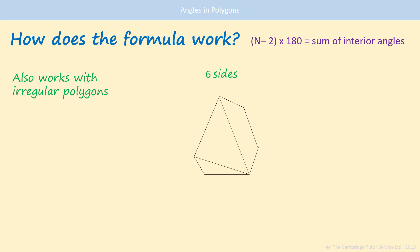So we have an irregular 6-sided shape here, and if we divide it into the triangles, you'll see that we still have 1, 2, 3, 4, 2 fewer than the number of sides. We can still work out the sum of the angles of this 6-sided irregular polygon.